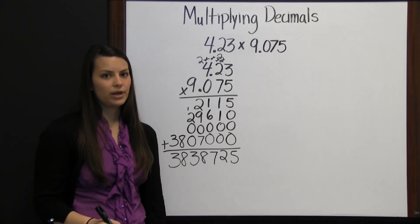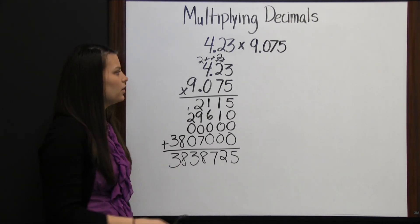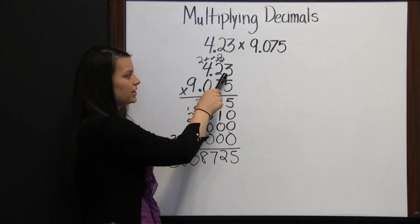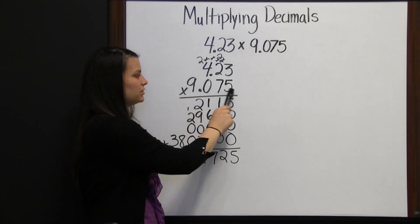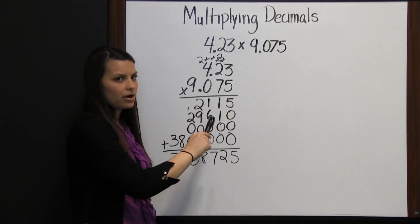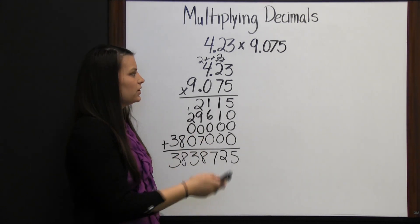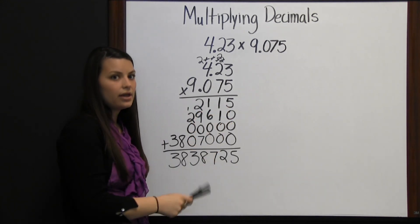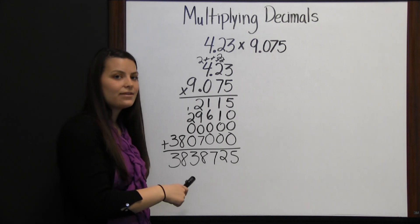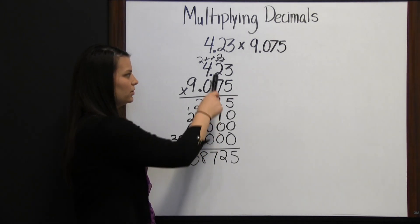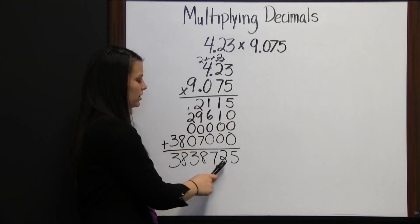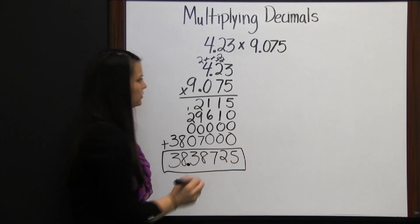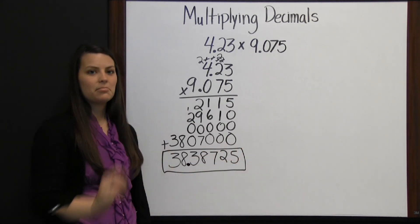To determine where the decimal point goes when you've multiplied your decimals together, take how many numbers there were behind the decimal in your first number and how many in your second number and add those together. We had two numbers behind the decimal in the first and three in the second, so our result will have five numbers behind the decimal. Count one, two, three, four, five places from the right. This is the result of multiplying the two decimals together.